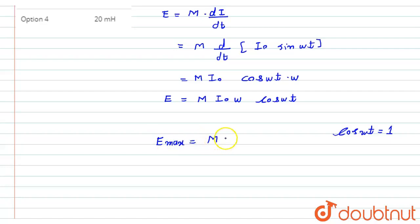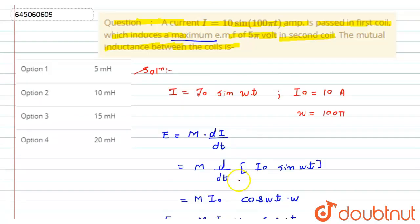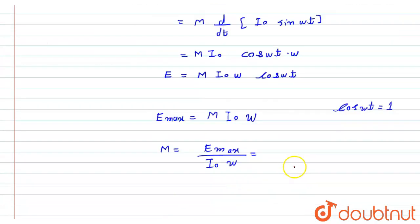So if you put cos(ωt) = 1 in this equation, we get E_max will be equals to mutual inductance M times I₀ times ω. From here, the required mutual inductance, that is capital M, will become equals to E_max divided by I₀ times ω. Now if you substitute the values, that is E_max we have 5π volts, that is divided by I₀ is 10 into ω we have 100π.